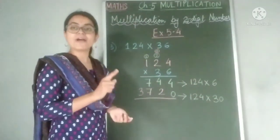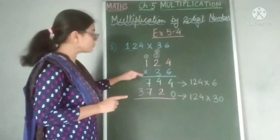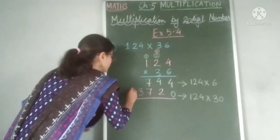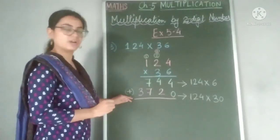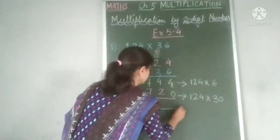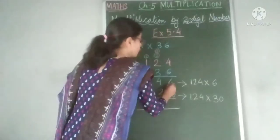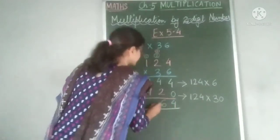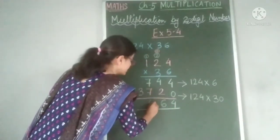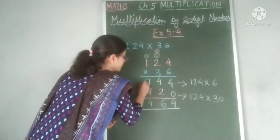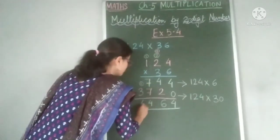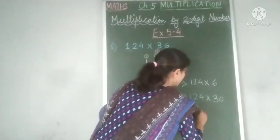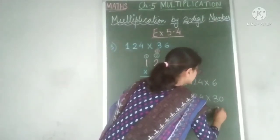Now, to get the final answer or to get the product, we have to add the first partial product with the second partial product. For your convenience, I put a symbol of addition here and we add. What answer do we get? 4 plus 0 equals 4. 4 plus 2 is 6. 7 plus 7 is 14. So I write this tiny one here. Now, 3 plus 1 is 4.